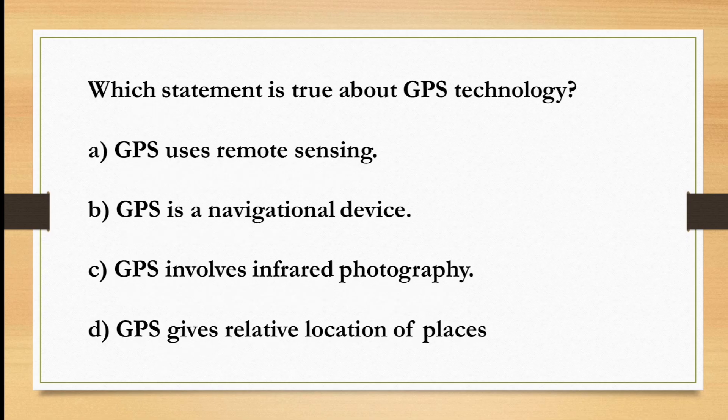The next question is, which statement is true about GPS technology? Option A is GPS uses remote sensing. B, GPS is a navigational device. C, GPS involves infrared photography. D, GPS gives relative location of places.